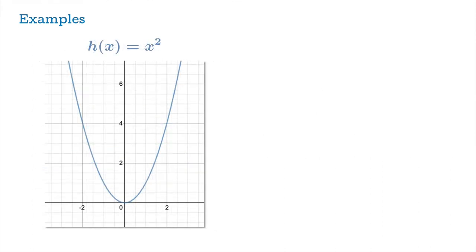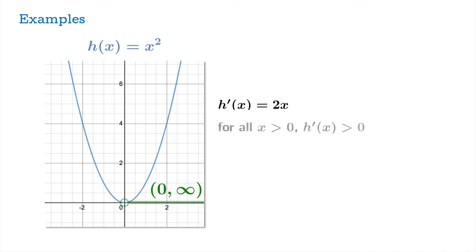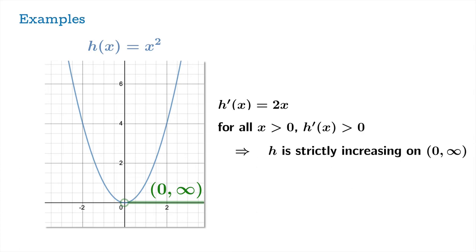Here's the squaring function. It's pretty clear we're not going to be able to show that it's increasing on all of ℝ — it clearly decreases and then switches over to being increasing at the origin. So let's just focus our attention on the open interval from 0 to infinity. The derivative function has formula 2x, and if x is greater than 0, then the value of that function is positive. And therefore h is strictly increasing on the open interval from 0 to infinity.